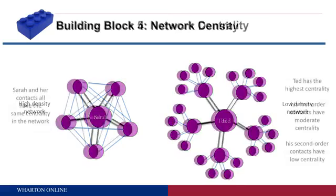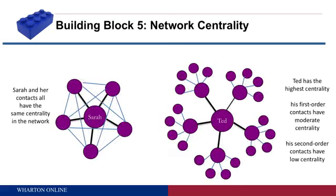The fifth and final building block is network centrality, which is closely related to density. In Sarah's network, all contacts are equally central — connected to the same number and set of people. But in Ted's network there's a lot of variation: Ted is most central, with access to all the information in that hub-and-spoke system. The people he's directly connected to are moderately central, while their connections are relatively peripheral. Centrality is something we can measure and track, and it has different implications depending on the configuration and structure of your network.